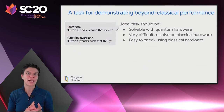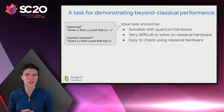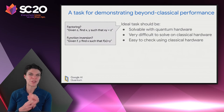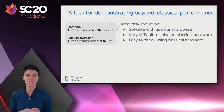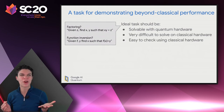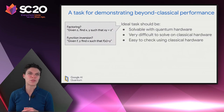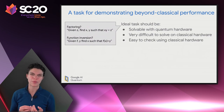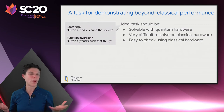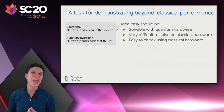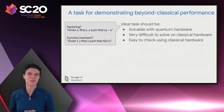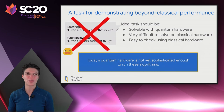We need a task for demonstrating beyond-classical performance. The ideal task should be: easy to solve with quantum hardware, very difficult to solve with classical hardware, and ideally easy to check using classical hardware. Some examples include factoring via Shor's algorithm, and the Grover algorithm for function inversion. Unfortunately, quantum processors today are not yet sophisticated enough to run these algorithms — we're a very long ways off from having a processor able to run factoring. So we need a different task, and we can give up the third requirement — verifiability — to find something better suited for our current system.